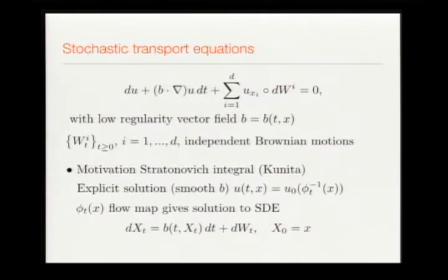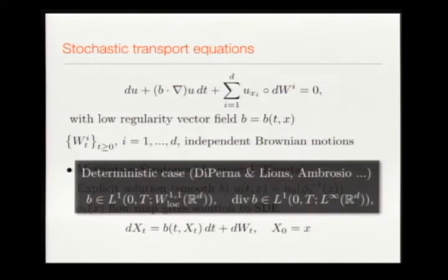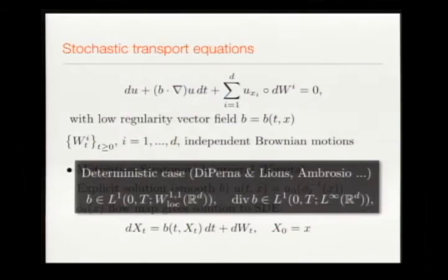As in the deterministic case, you invert the flow and plug in the initial data. What you want to do is push the regularity on the velocity field — have it as rough as possible. If you turn off the noise, you can push down to W^{1,1} in the spatial variable (DiPerna-Lions and others). It turns out that if you add noise, a regularizing-by-noise phenomenon occurs, so you can get well-posedness under lower conditions than in the deterministic case.